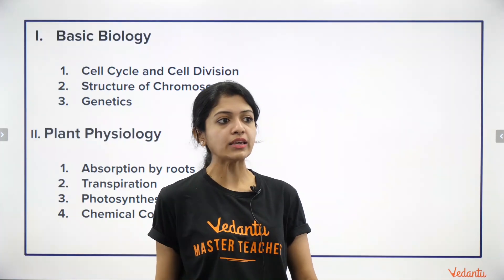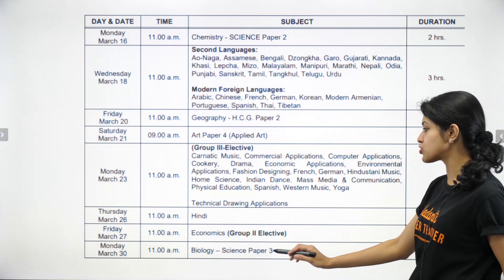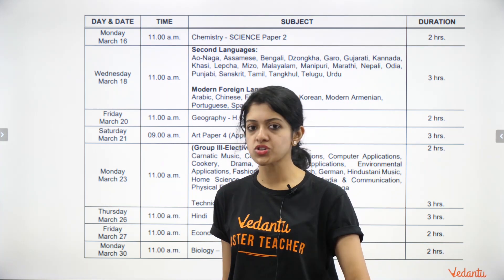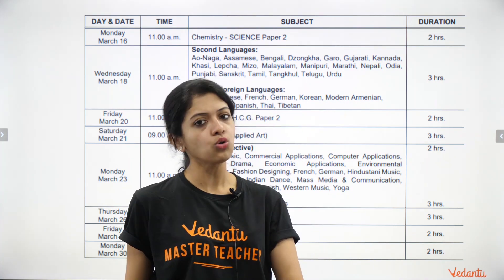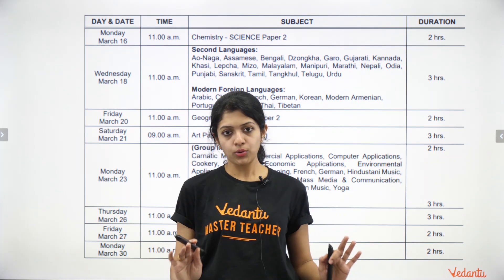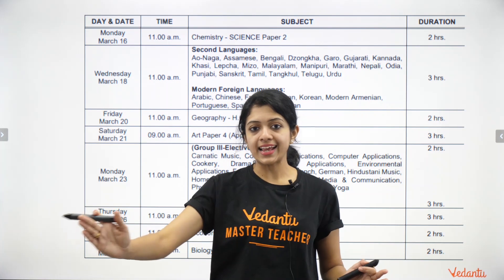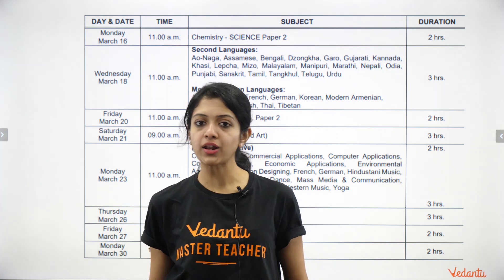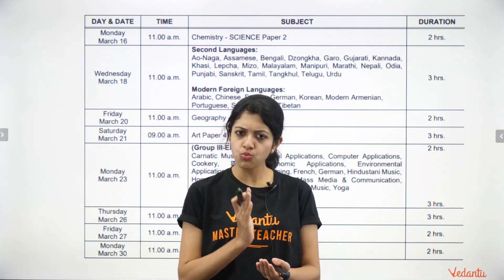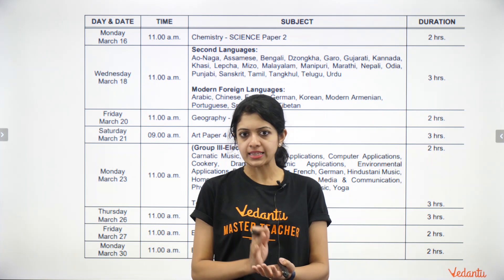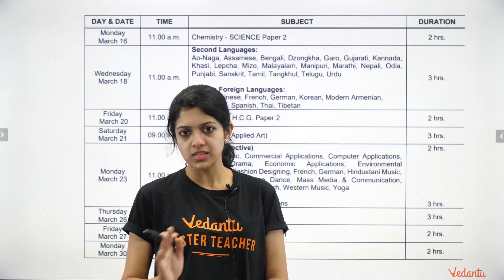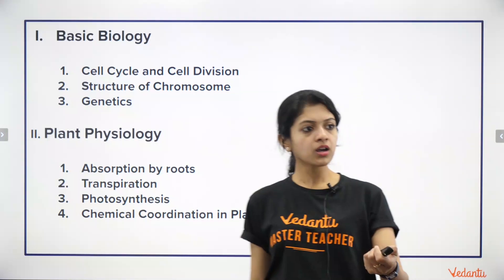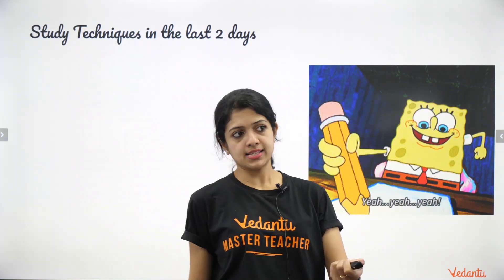Then you have the last two days — the 28th and 29th, and the 27th also for some who don't have economics. This is basically the idea: we are dividing your 30 days of board exam duration into three parts. One revision around March 9th-10th, a second revision around March 19th-21st, and the last revision just before your exam.